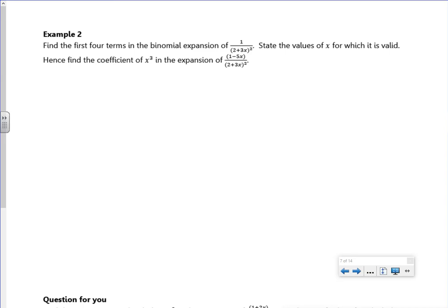Right then, so on the first four terms, or 2 plus 3x squared, so 2 plus 3x to the minus 2, so 1 over it. Take the 2 out, 2 to the minus 2.